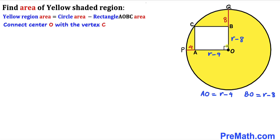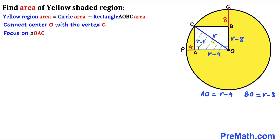Let's connect center O with point C on the circle. Since AOBC is a rectangle, opposite sides OB and AC are equal, so AC is also r minus 8. The angle CAO is 90 degrees, and CO is the radius r. We now focus on triangle OAC with side lengths r minus 4, r minus 8, and r.